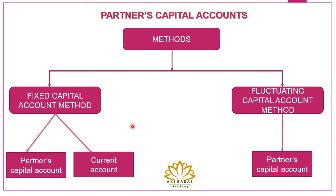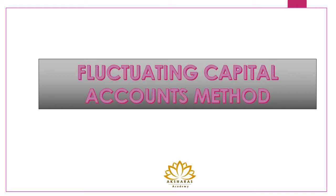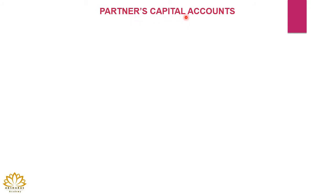Now let's see the format of the fixed capital account method and fluctuating capital account method. We'll start with the fluctuating capital account method since there is only one account prepared here. Under this method the capital will be changing year after year because all transactions will be recorded under this one account. Let's see how the account is prepared.